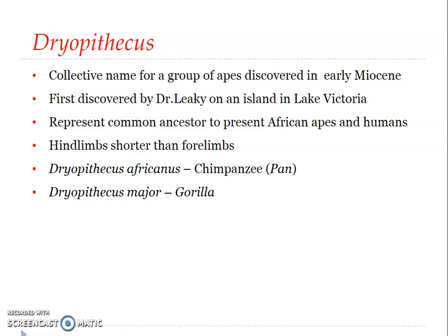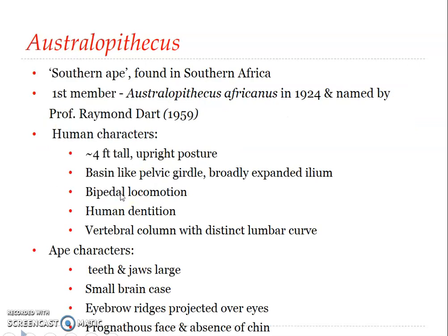A few investigators are of the opinion that man is not related to apes but evolved separately from Tarsius and lemurs. However, there are characters which show the closeness of Dryopithecus with modern-day humans. In addition to Dryopithecus, other prominent genera of ape-like primates known from Miocene and Pliocene times include Ramapithecus and Kenyapithecus, though these are not covered in the syllabus here.